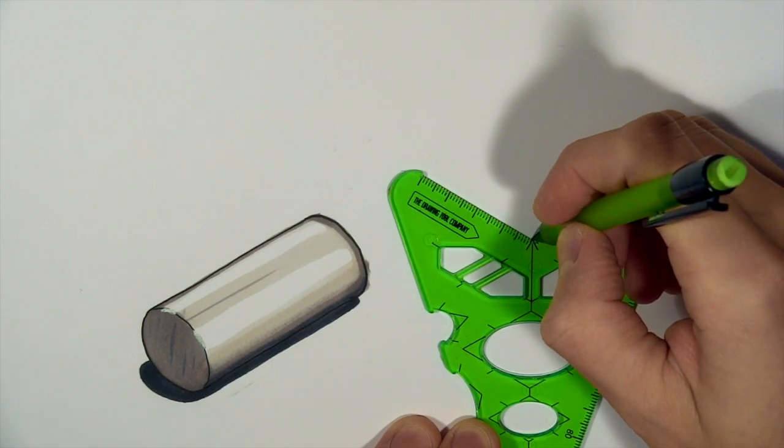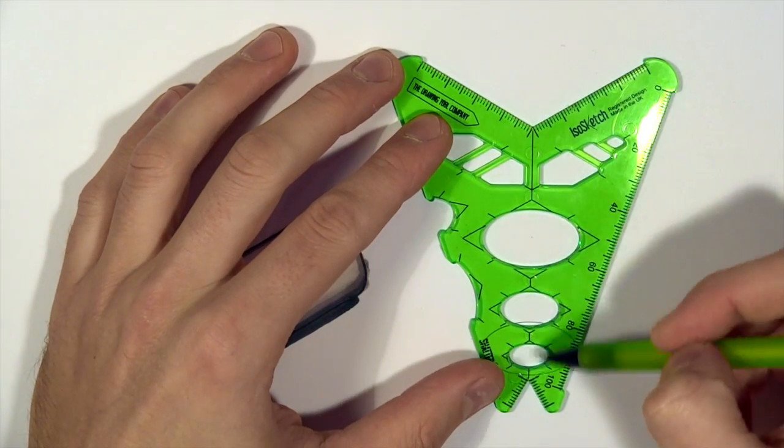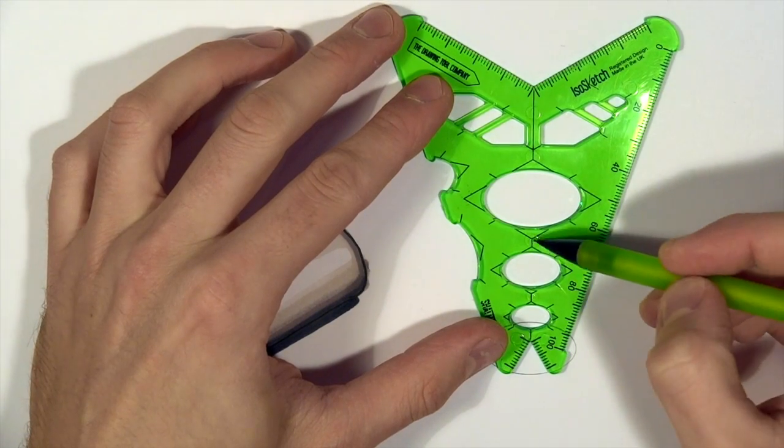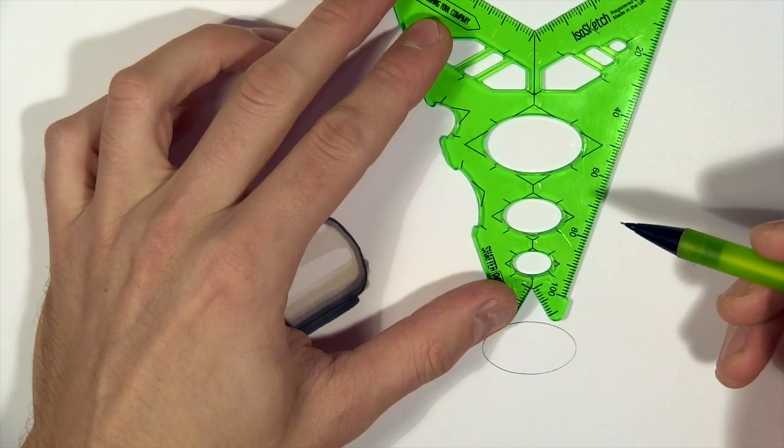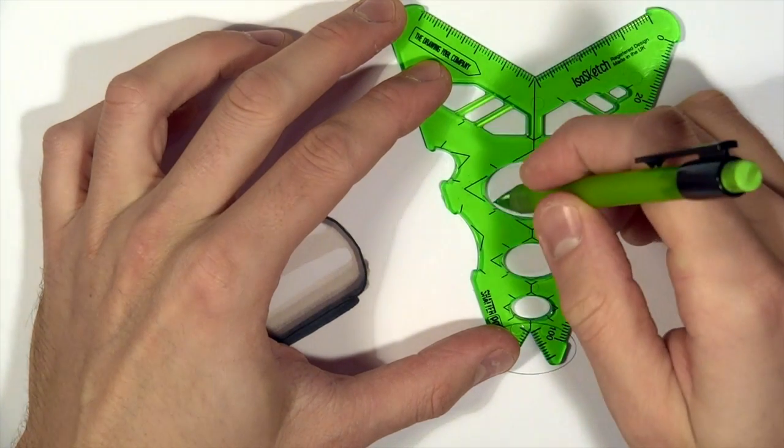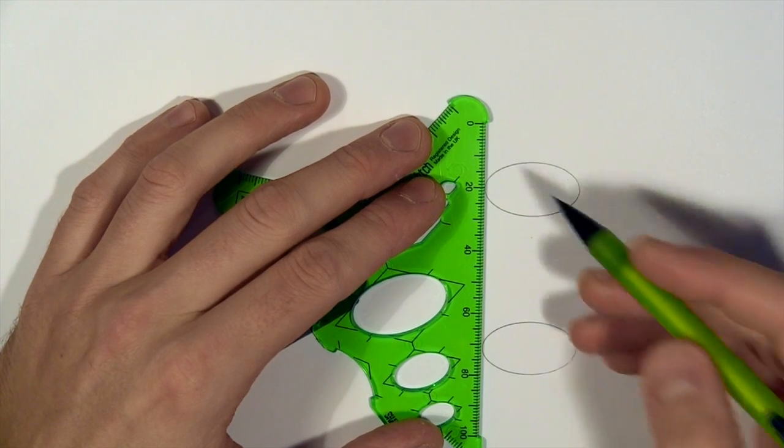We're just using the spine of Isosketch and making a dot there, making a mark, which is a quick reference point. As long as we line that up with somewhere on the center line of Isosketch, you can see there's little straight lines running throughout the tool that join up the stencils. As long as we stick to that, we know we're lining things up.